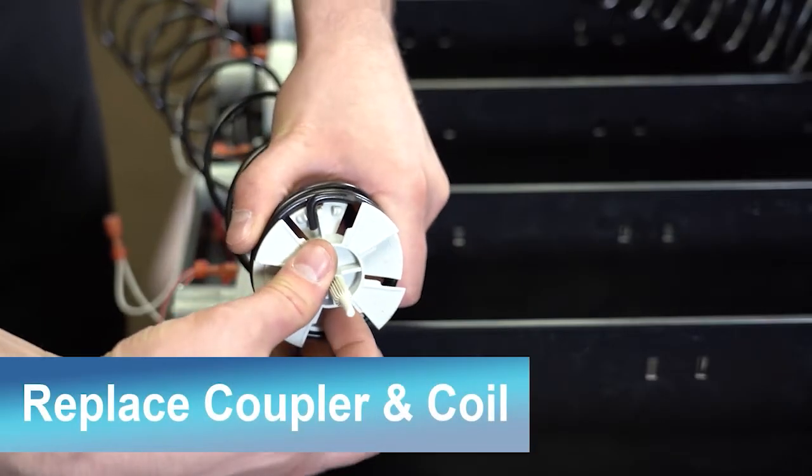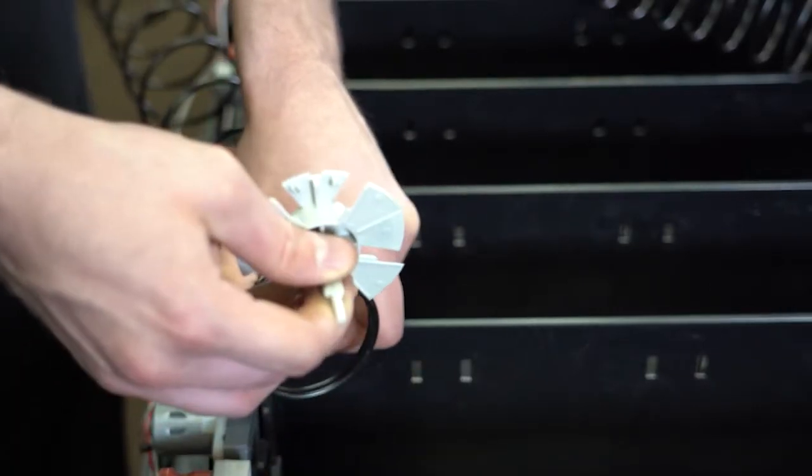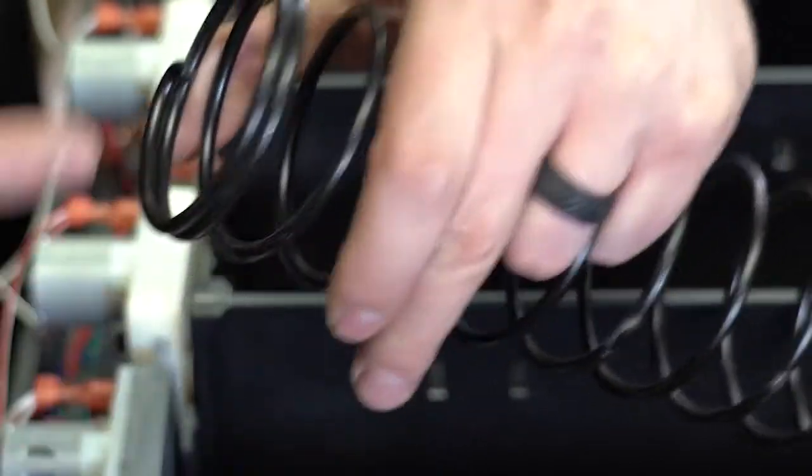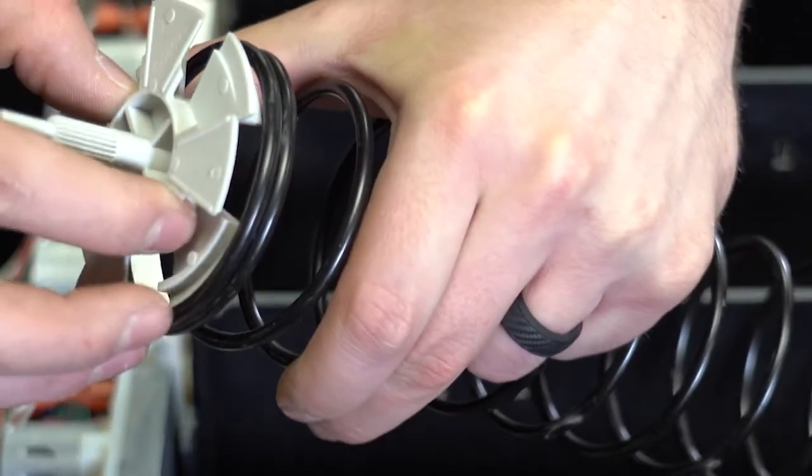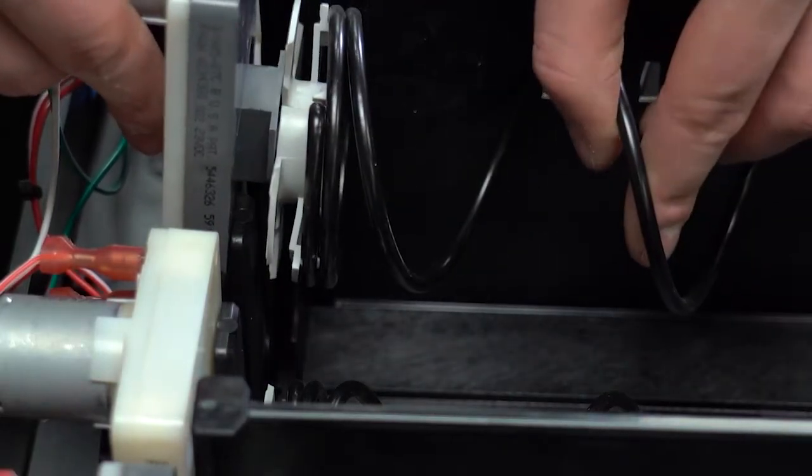To remove the coupler from the coil, push it in and twist it so that it can slide out through the openings. To connect the coil and coupler, place the coupler fins between the last two coil strands and snap the coupler in the coil like so. Now reconnect the coupler to the motor.